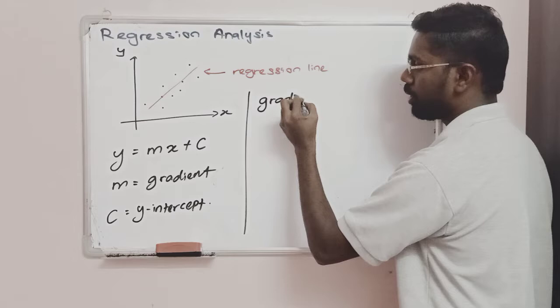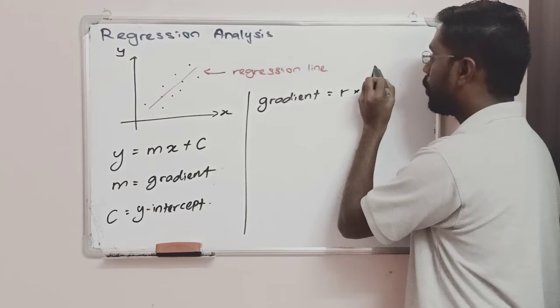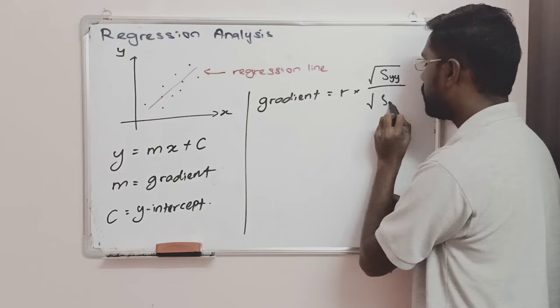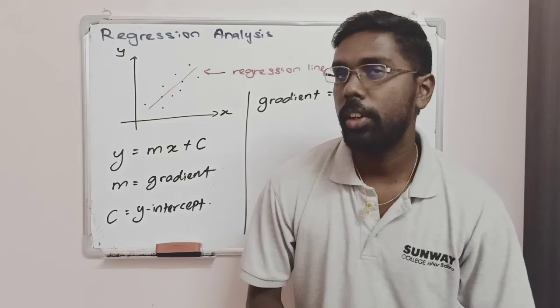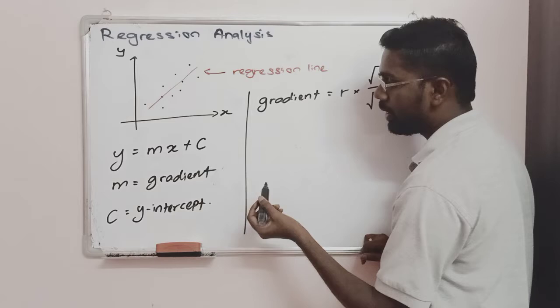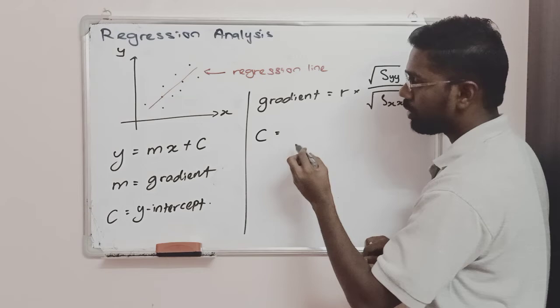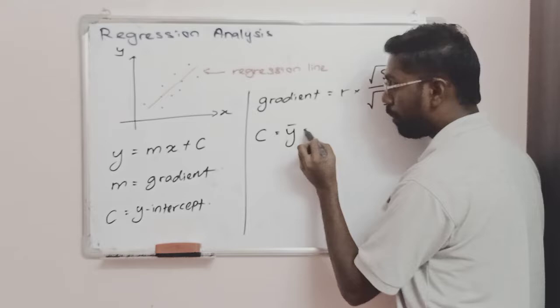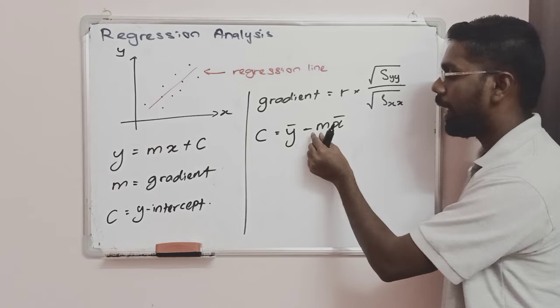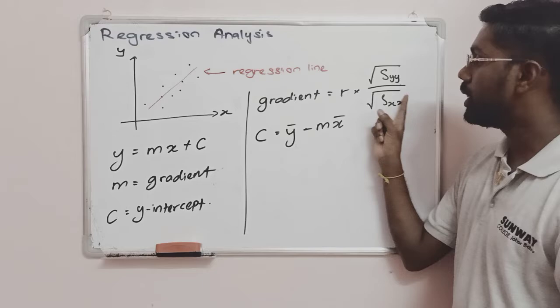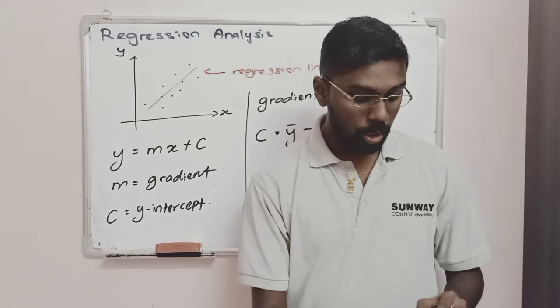To find m, the gradient, it is going to be R multiplied by the square root of SYY divided by the square root of SXX. The formulas for SXX and SYY were given in a previous class on finding the Pearson correlation coefficient. To find the y-intercept, the c value is going to be the mean of Y minus M multiplied by the mean of X.